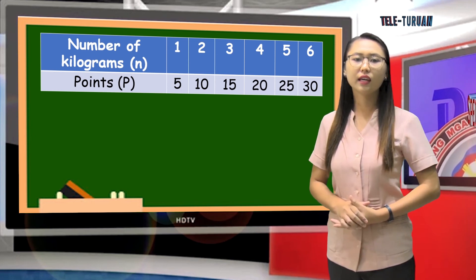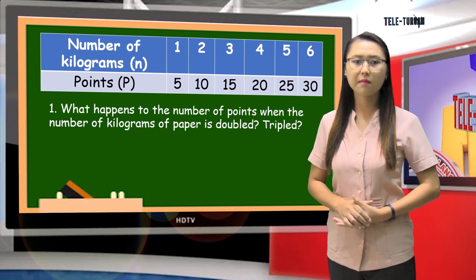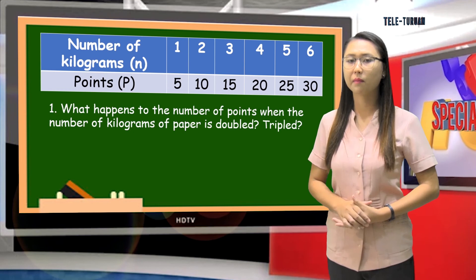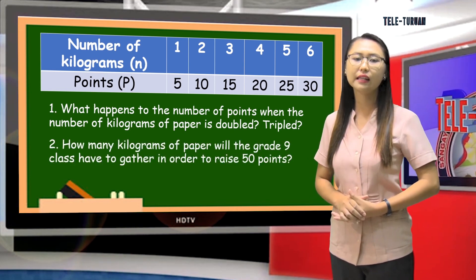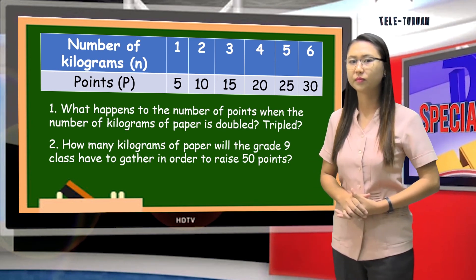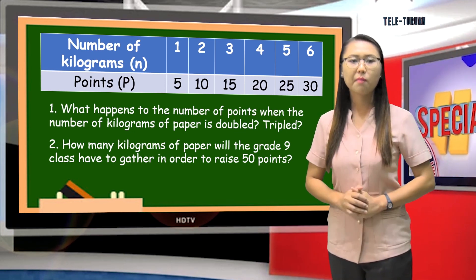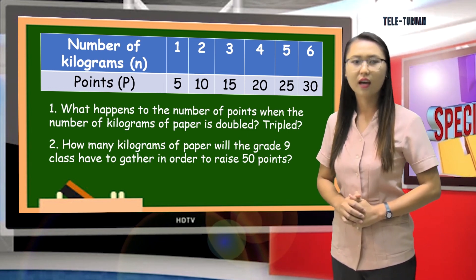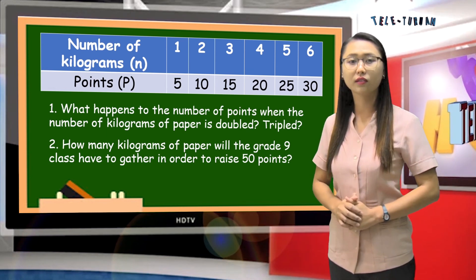By looking at this table, what happens to the number of points when the number of kilograms of paper is doubled? How about if the number of kilograms of paper tripled? As we observed, if the number of kilograms of paper is doubled, the number of points doubled. And if the number of kilograms of paper is tripled, the number of points also tripled.